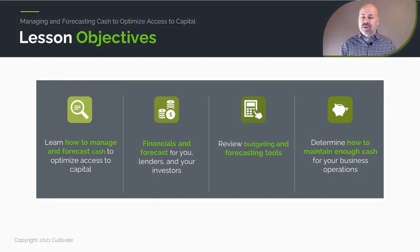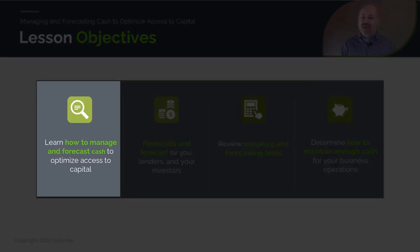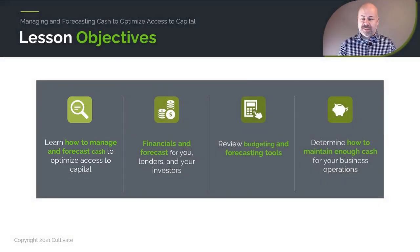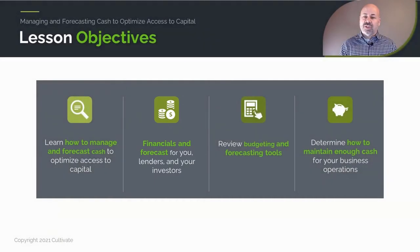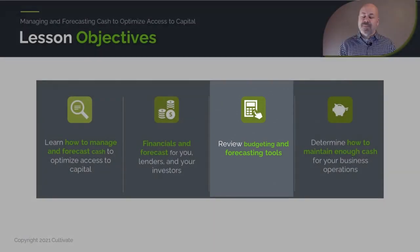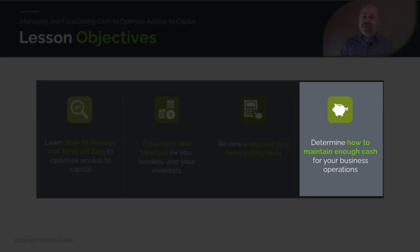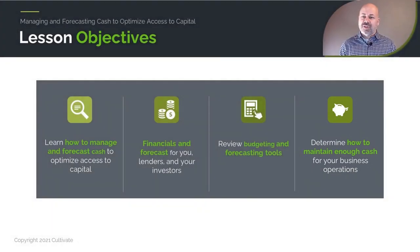Our learning objectives for this lesson are to learn how to manage and forecast the cash your business will have, in a way that can help you optimize your access to capital. To say it succinctly, these are things you're going to have to do if you're going to get any kind of loan or investment for your business. It's also something you'll want to do before you start spending your own hard-earned money. We're going to show you how to create financials and forecasts for lenders and investors, how to create and review a budget and forecast, and ultimately determine how much cash you're going to need — including which months you'll have a shortfall and need to supplement with loans, investment, or personal savings.